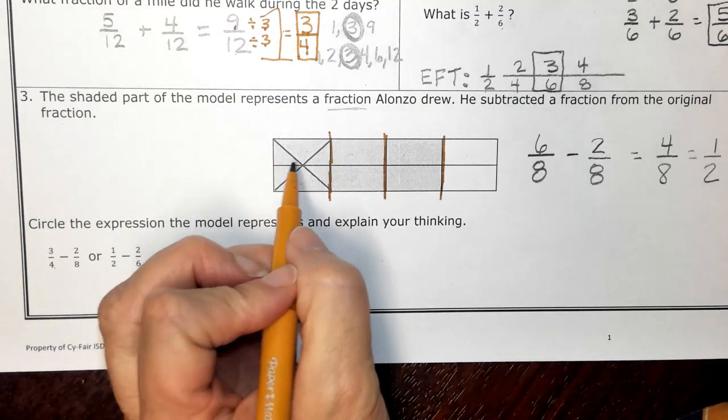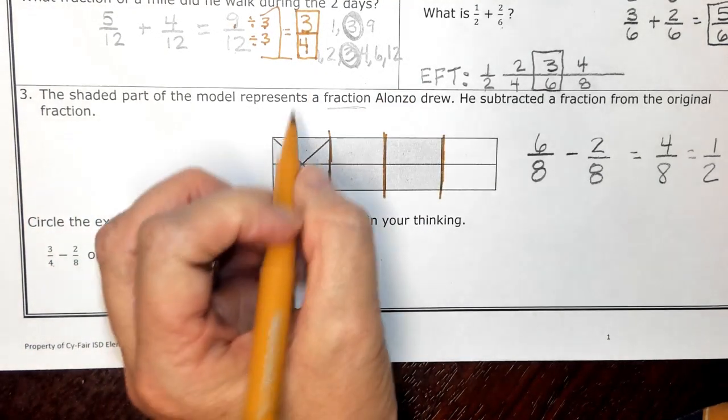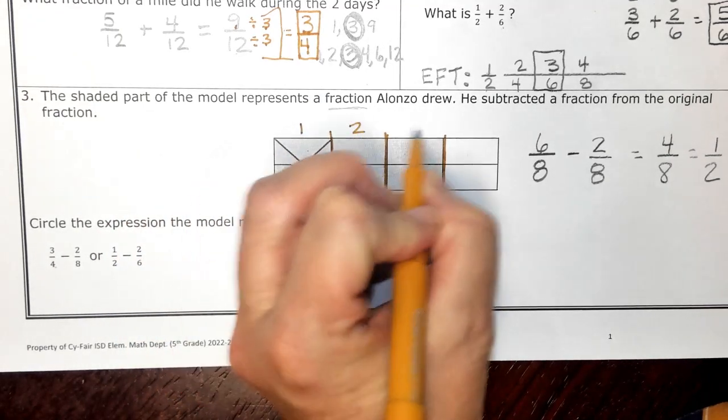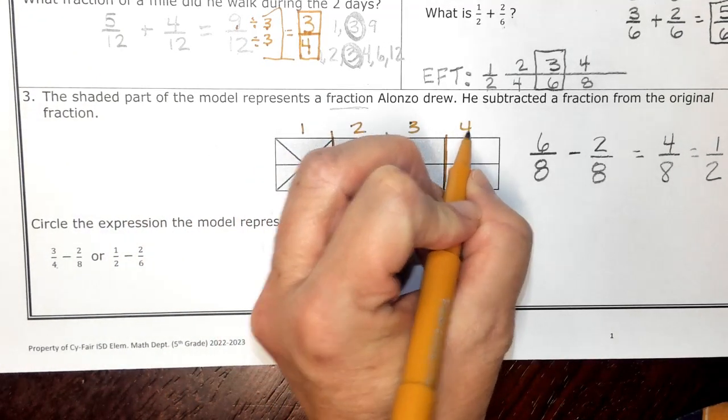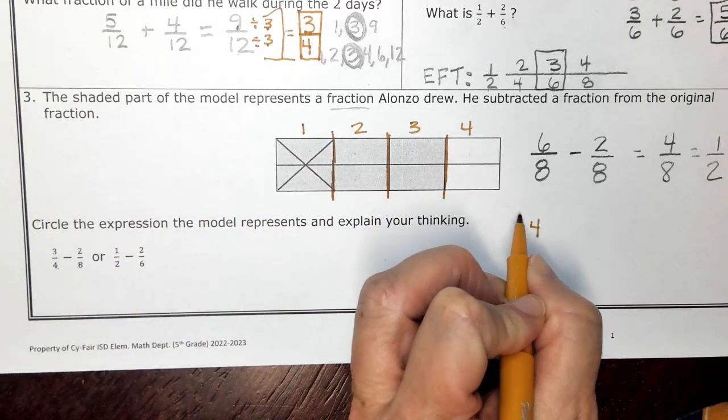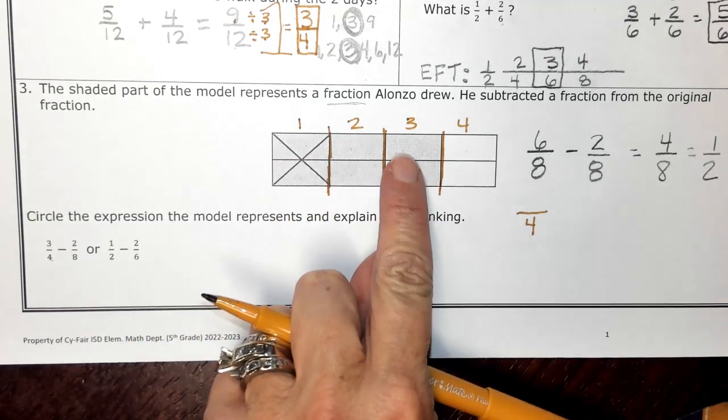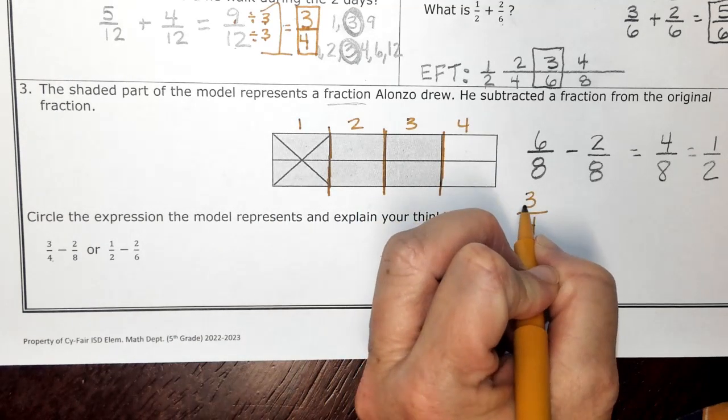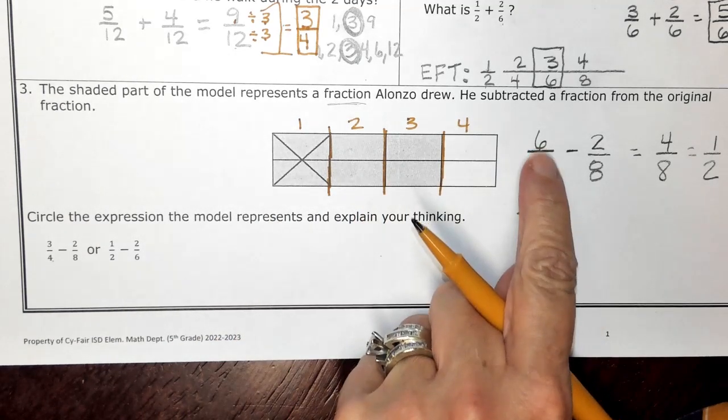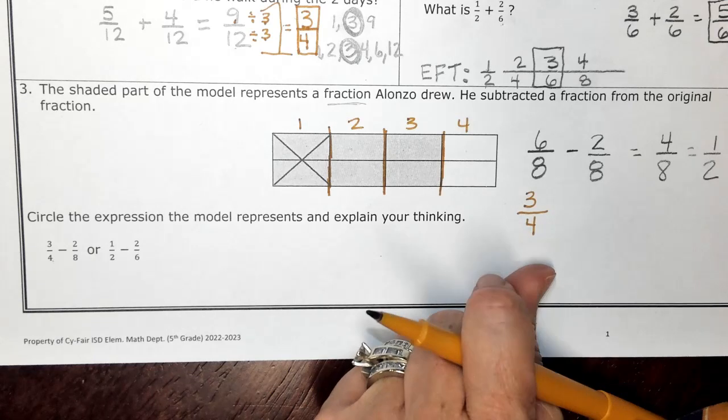And so I do see one. I see that this could be 1, 2, 3, 4 equal pieces. So my denominator would become four. And 1, 2, 3 of those pieces are shaded. So another name for six eighths might be three fourths.